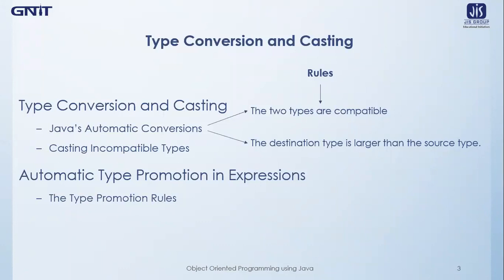Fortunately, it is still possible to obtain a conversion between incompatible types. To do so, we have to use a cast, which is known as casting. This typecasting concept has already been discussed in C and C++, and it also applies in Java. Typecasting performs an explicit conversion between incompatible types.